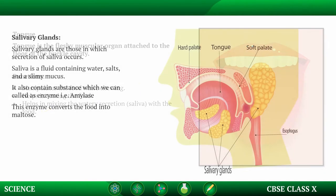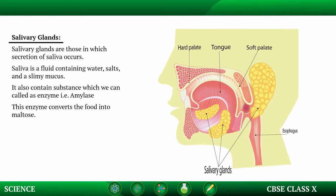Salivary glands are those in which secretion of saliva occurs. Saliva is a fluid containing water, salts, and slimy mucus. When you eat your favorite food, your mouth waters — this happens because of the secretions of the salivary glands.